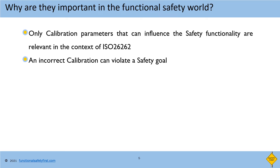From a functional safety point of view, only calibration parameters that can influence safety functionality need to have a clearly articulated strategy as stated in ISO 26262. All other calibrations that do not interact with or influence safety requirements do not matter.